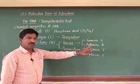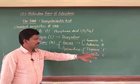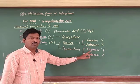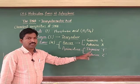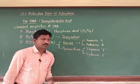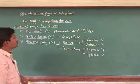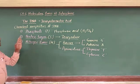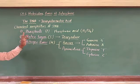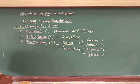In the case of RNA, instead of thymine, there is the presence of uracil. We will see that later. Now the chemical composition of DNA is understood.